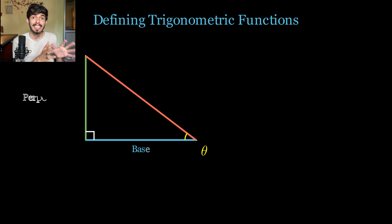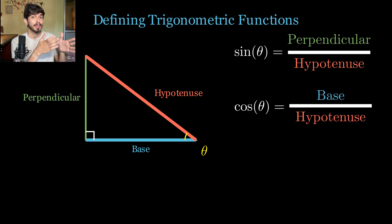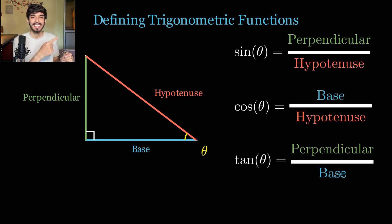So now the job left is to just name those functions. So for this triangle, the ratio of perpendicular to hypotenuse is equal to sin theta. Base upon hypotenuse is equal to cos theta. And perpendicular upon base we just saw is called tan theta.